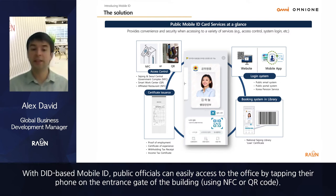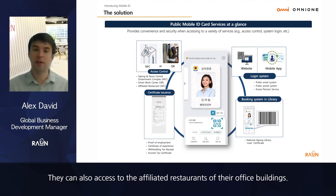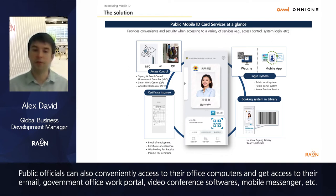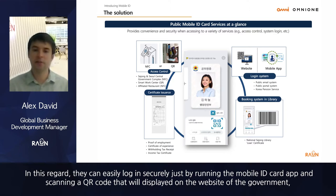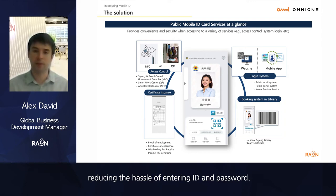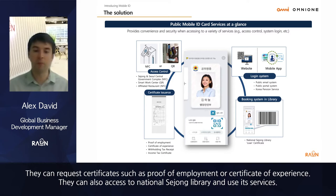With the DID-based mobile ID, public officials can easily access their office by tapping their phone on the entrance gate, using NFC or QR code. They can also access affiliated restaurants and conveniently log into their office computers to access email, government office work portals, video conference software, and mobile messengers. Mobile ID enables officials to log in securely by running the mobile ID card app and scanning a QR code on the government portal website, reducing the hassle of entering an ID and password.